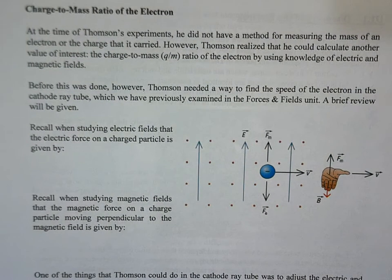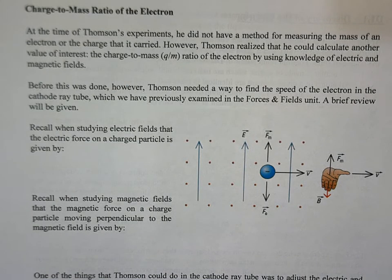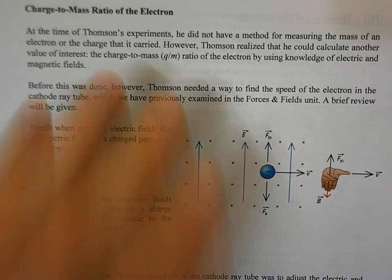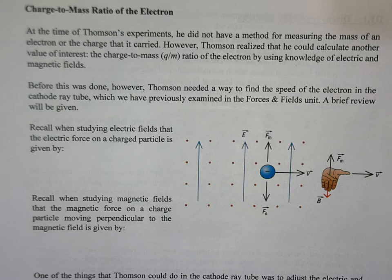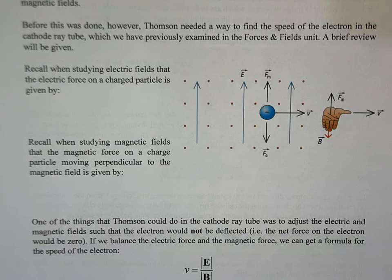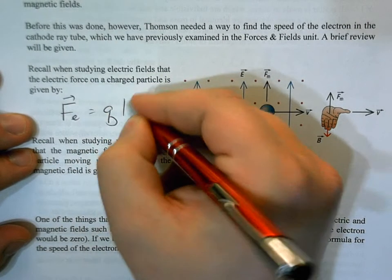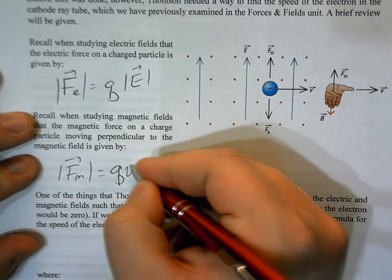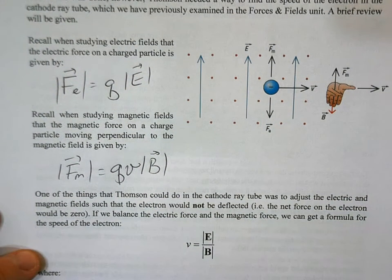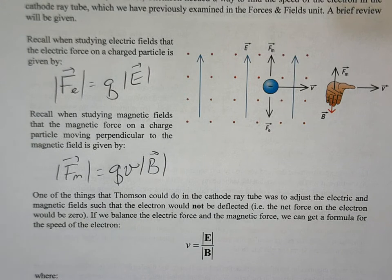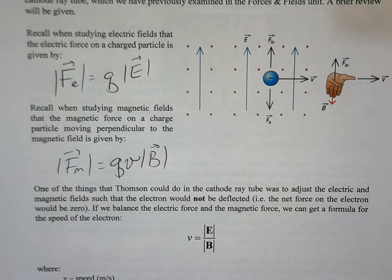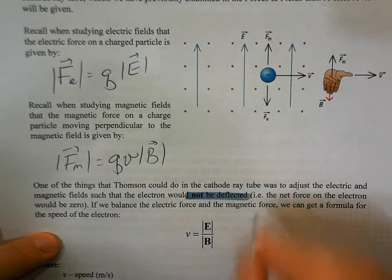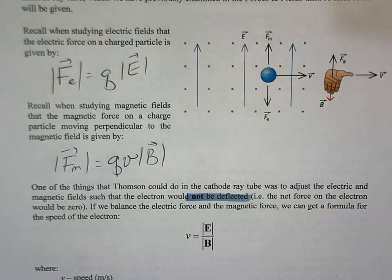Thomson was able to calculate the charge-to-mass ratio. At the time they couldn't determine the elementary charge (done later by Millikan) or the mass, but they could find this ratio using electric and magnetic fields. The electric force on a particle is F = qE, and the magnetic force is F = qvB. Thomson could adjust the electric and magnetic fields so the electron passed through in a straight line — undeflected — meaning the net force was zero.